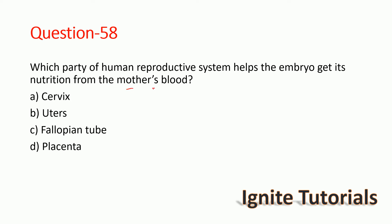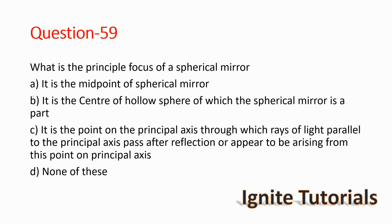The correct answer is the placenta — the placenta is the correct answer, so option B is correct. Question 59: What is the principal focus of a spherical mirror? The principal focus of a spherical mirror is a point on the principal axis to which rays of light parallel to the principal axis converge after reflection.